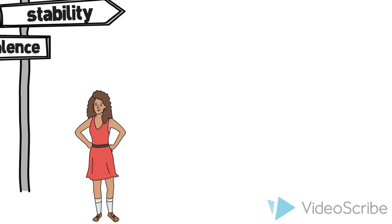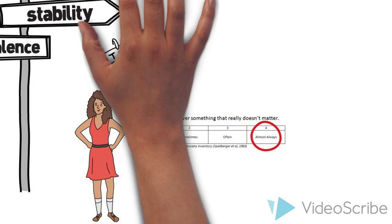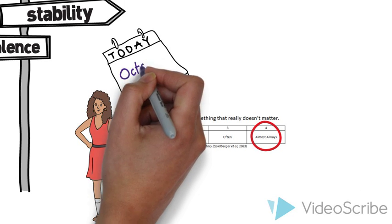Let's pretend we want to learn more about a person's level of anxiety. In order to ensure the questions we ask are stable, we would want to ask a person to rate the extent to which they agree with a statement like this at two time points.